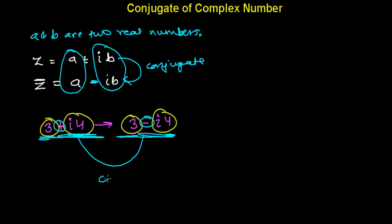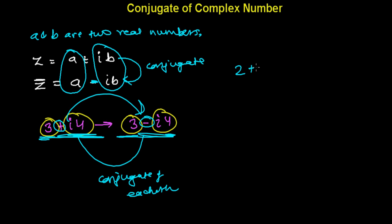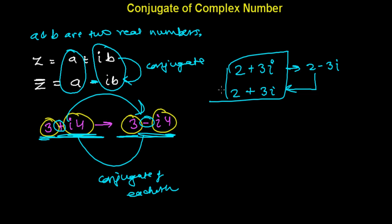So we can say that these are conjugates of each other. 3 minus 4i is the conjugate of 3 plus 4i, and similarly 3 plus 4i is the conjugate of 3 minus 4i. So if z is 2 plus 3i, then the conjugate will be 2 minus 3i, and the conjugate of 2 minus 3i will be 2 plus 3i — the real part stays the same and the minus turns into plus.